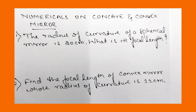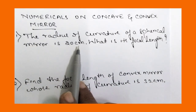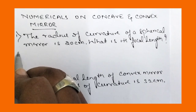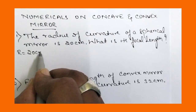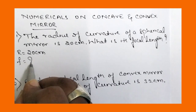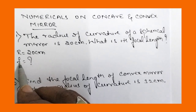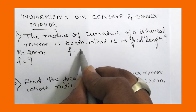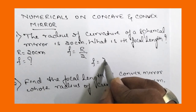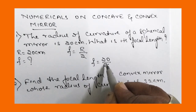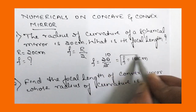The first question is: the radius of curvature of a spherical mirror is 20 centimeters — what is its focal length? Let us make a list of data. Radius of curvature is given as 20 cm; we have to find the focal length. The relationship between radius of curvature and focal length is: focal length is half of the radius of curvature. Therefore, focal length equals 20 divided by 2, which is 10 centimeters.